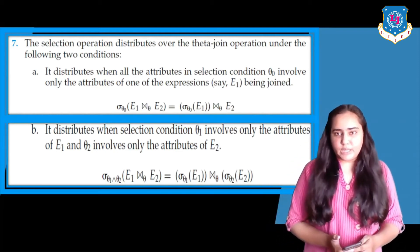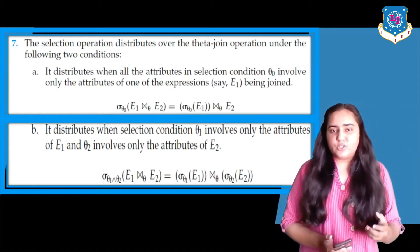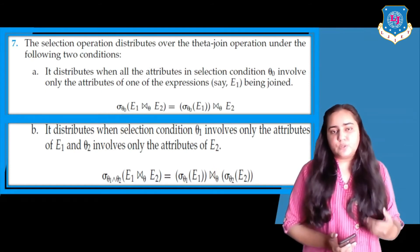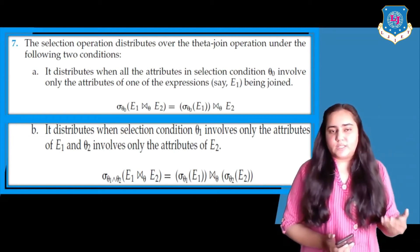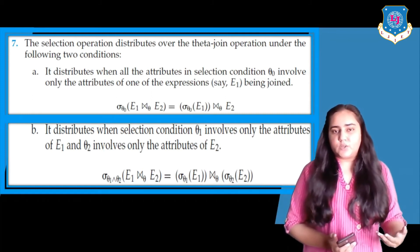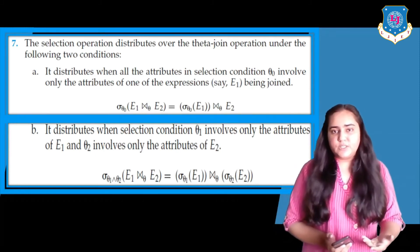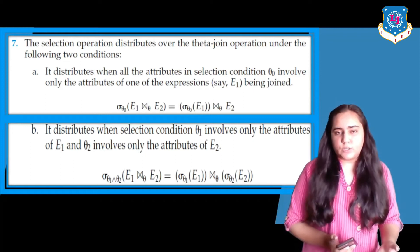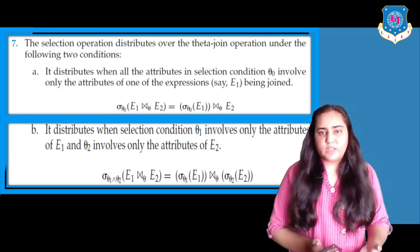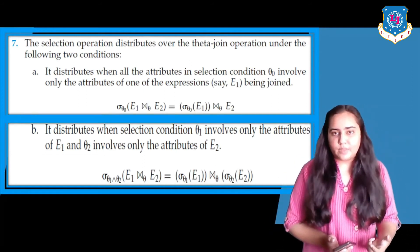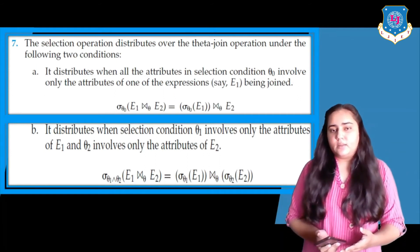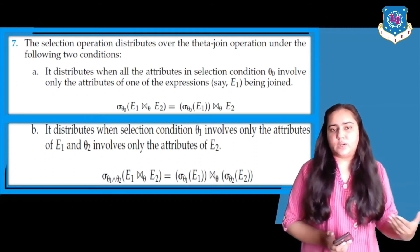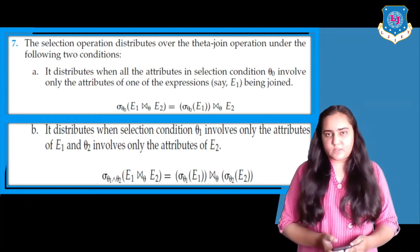Rule 7b says it distributes when selection condition theta 1 involves only the attributes of E1 and theta 2 involves only the attributes of E2. On the left-hand side, sigma theta 1 and theta 2 is applied on the theta join between E1 and E2. Since theta 1 contains all columns of only E1 and theta 2 contains only columns of E2, you can convert this into sigma theta 1 of E1, then take a theta join applying theta 2 to E2. That is our seventh rule.